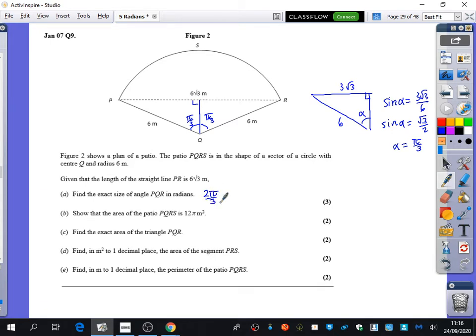Then it wants us to show that the area of the patio is 12 pi. Well that's really easy because the formula for the area is... anyone? Formula for area: half r squared theta. So it's a half times six squared times two pi over three, which is 12 pi. Why do we need to divide it by two? No, this does the whole thing for you. This does the whole thing, so don't do any... okay.